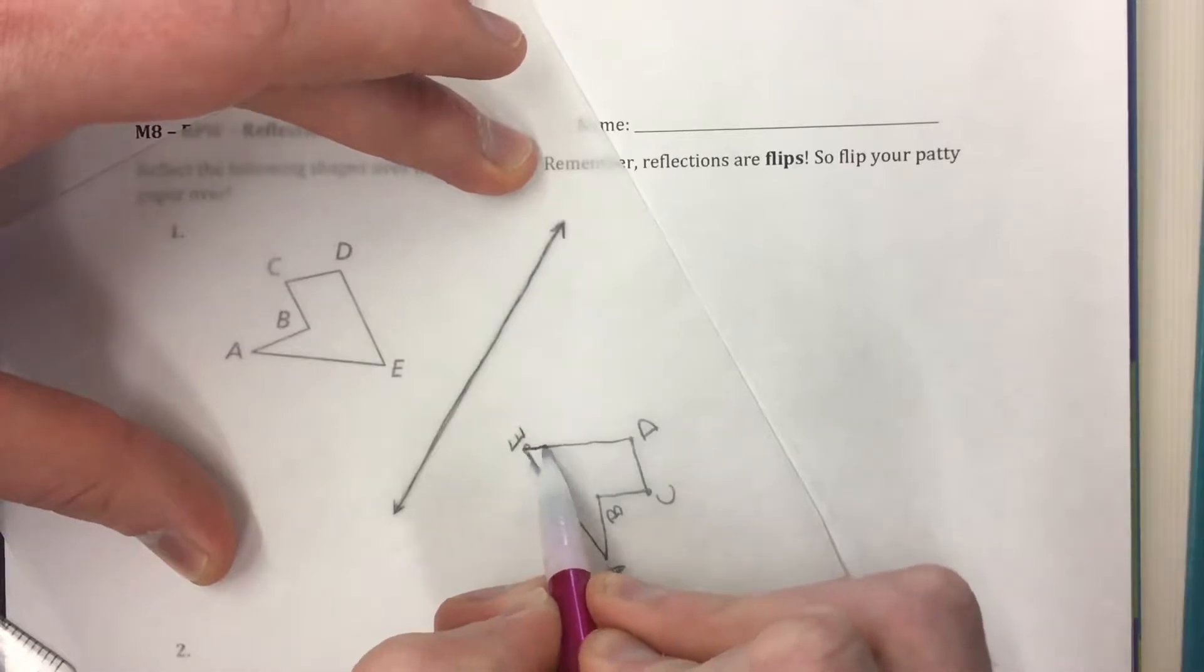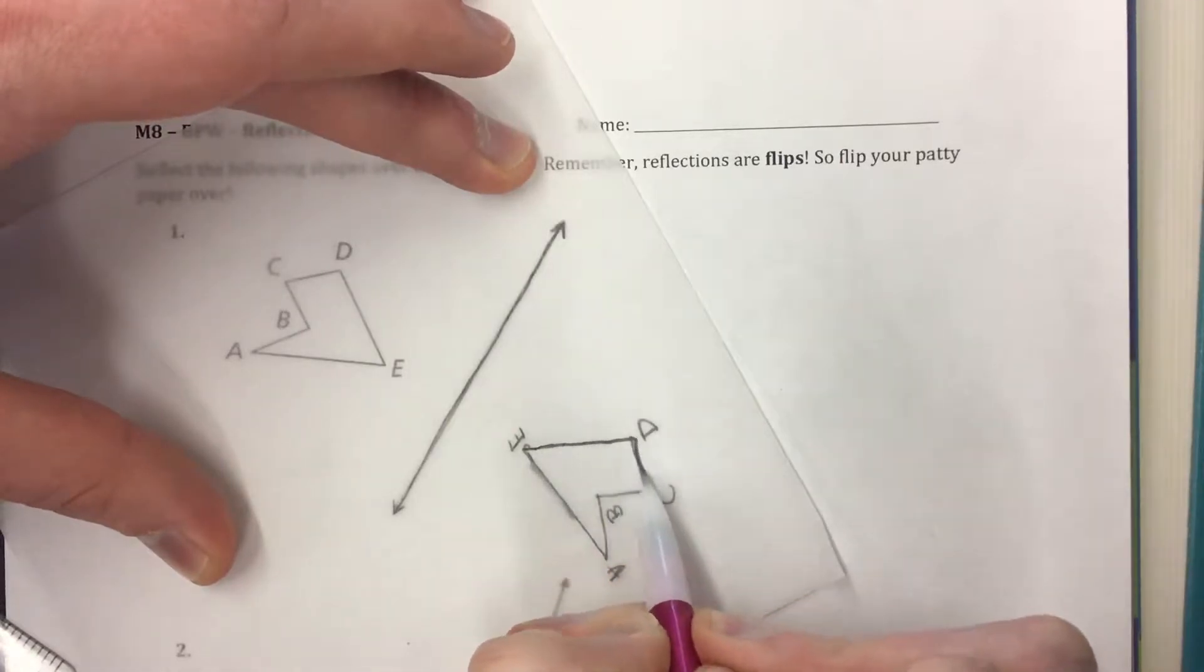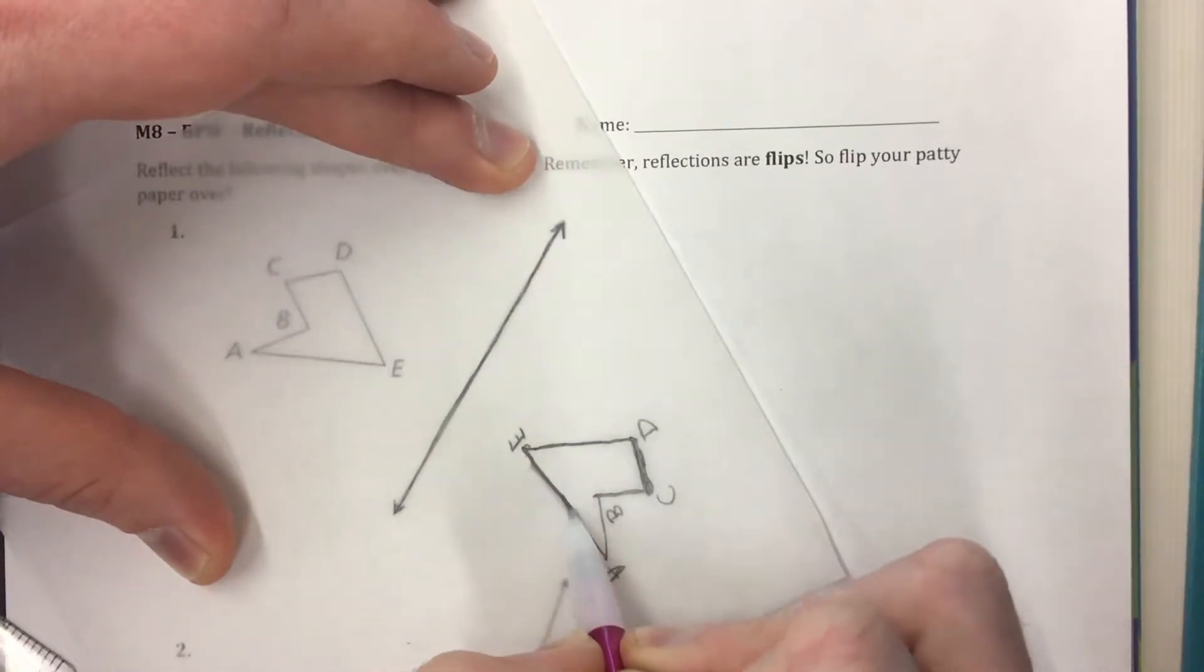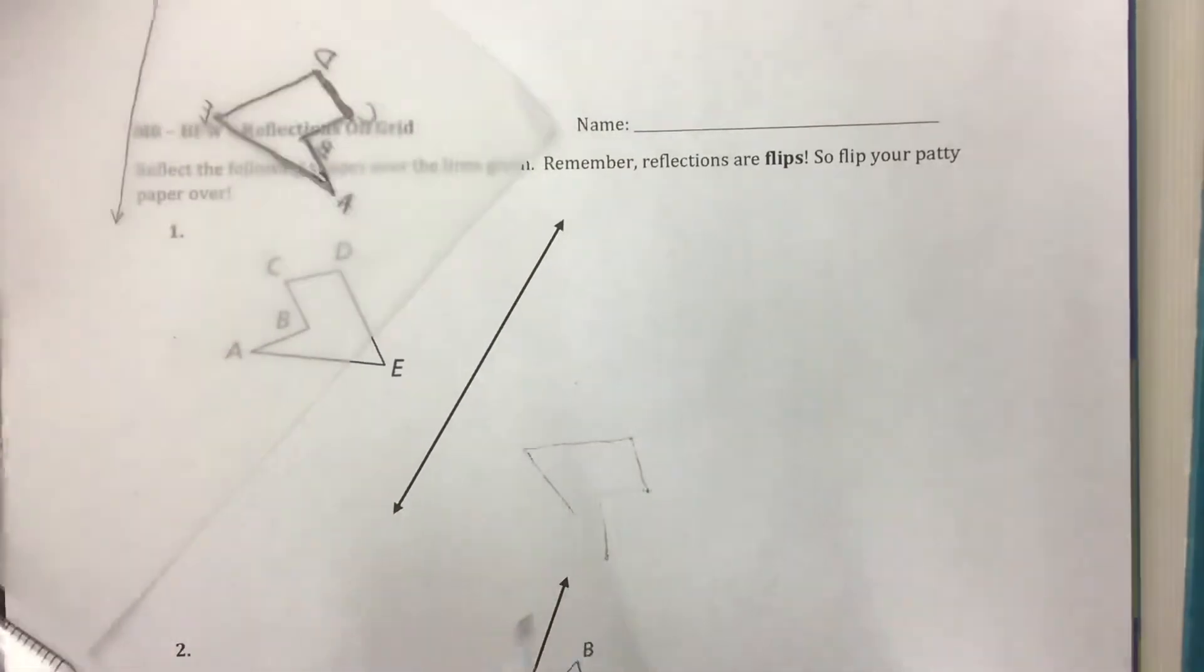You can trace it over top and press through. That wasn't great let's try again. You want to go through onto the other paper so then you can draw it. That worked pretty well.